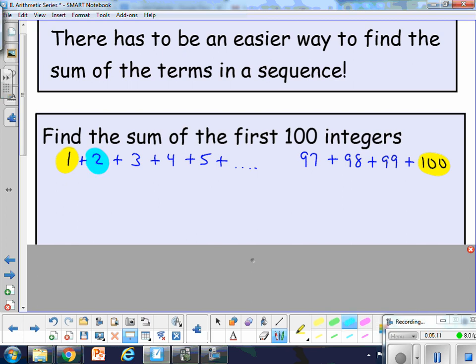Then the second term plus the second to last term is another 101. The third term plus the third to last term is also 101. So he's really viewing this sum as just a bunch of 101s. So the question is, how many 101s are there?